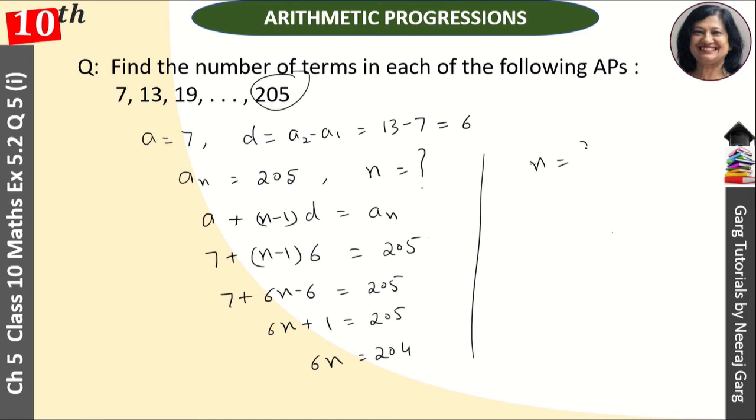So the value of n is 204 divided by 6, which cancels to give us 34. So n equals 34, and this is our answer.